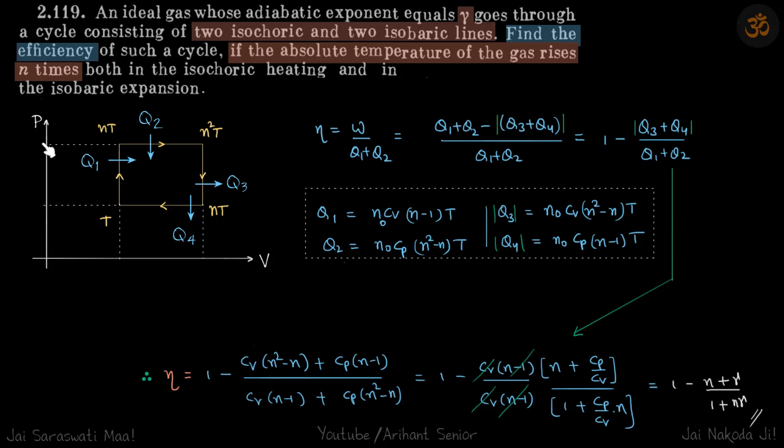This is an isochoric line, which means p1/p2 equals t1/t2. So p1/p2 is nt/t, which equals n.